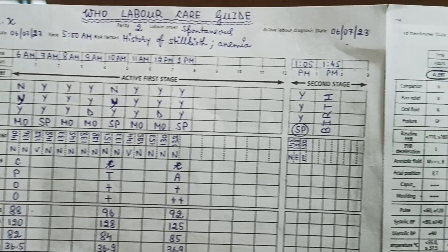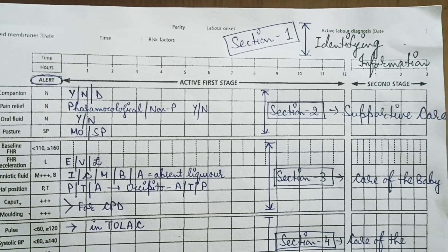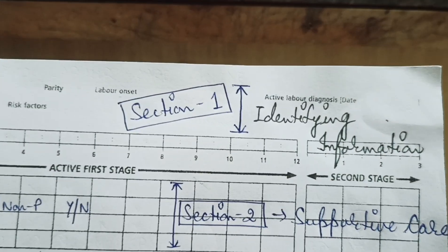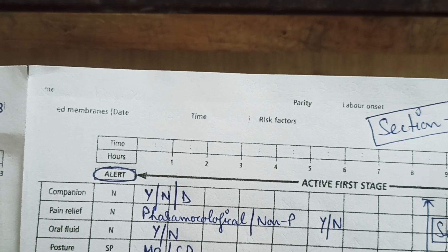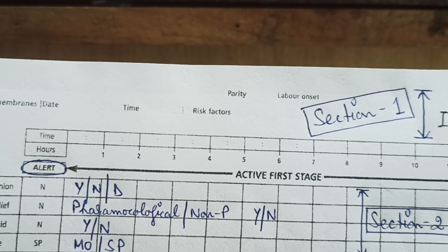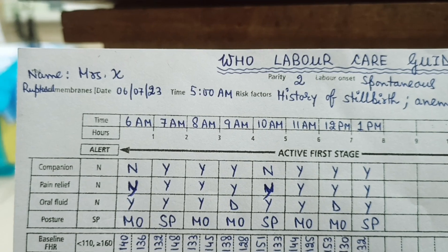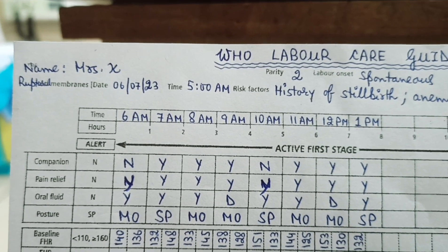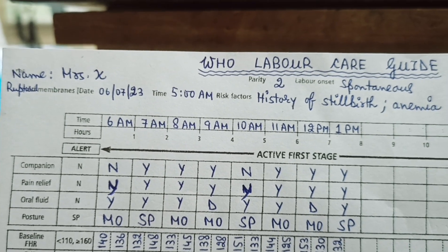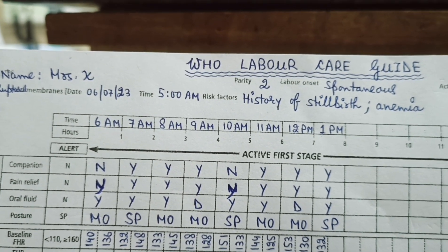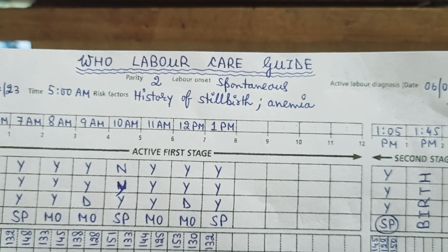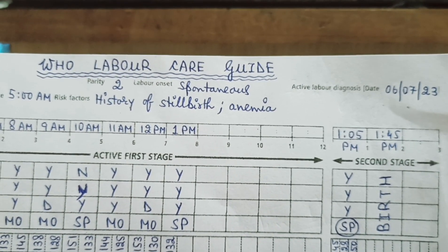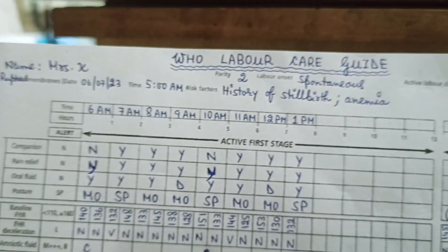The labour care guide consists of 7 sections. The first section consists of identifying information — you can find the time of admission, time of delivery, risk factors, parity and labour onset, and active labour diagnosis. In the filled example, Mrs. X had her membranes ruptured on 6th July 2023 at 5am, with history of stillbirth and anaemia. She is a second gravida with previous spontaneous delivery and a spontaneous onset of labour.